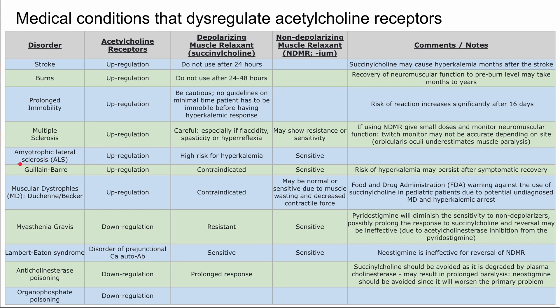ALS, or amyotrophic lateral sclerosis, also causes upregulation of acetylcholine receptors. These patients are at high risk for hyperkalemia, so you want to be cautious when using succinylcholine and make sure the potassium is not too high to start. In this case, patients can also be sensitive to the non-depolarizing agents.